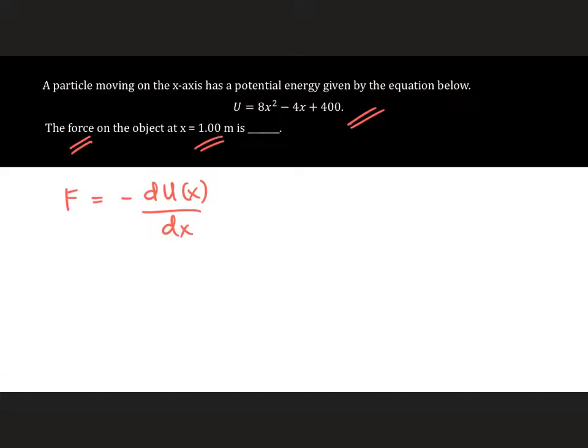So substituting our equation, we will have negative d, our U is going to be 8x squared minus 4x plus 4, with respect to x when x is equal to 1.